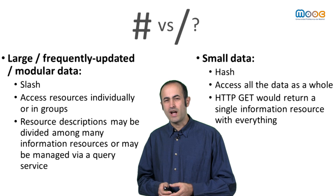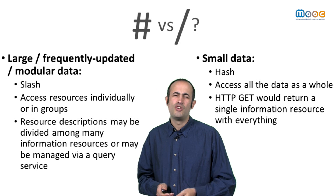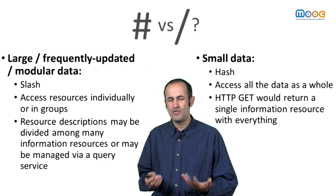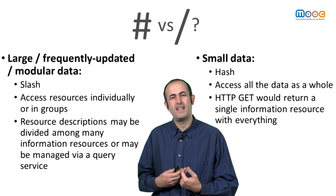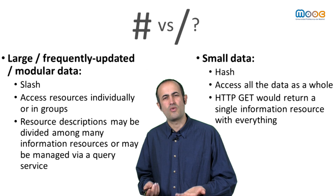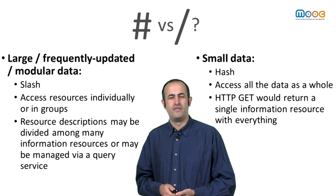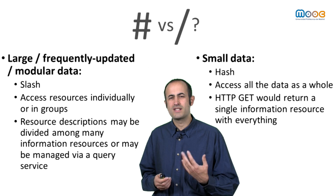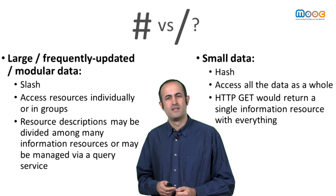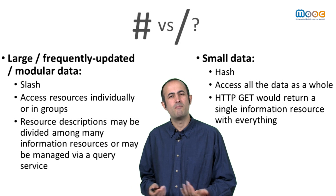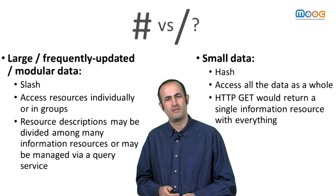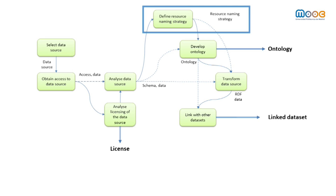If we have few data, using hash URIs allows us to access all data in a single request. This is useful, for example, to publish ontologies, since usually we want to have all the model descriptions.